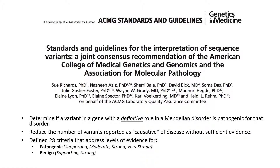In 2015, the American College of Medical Genetics and Genomics (ACMG) and the Association for Molecular Pathology (AMP) published a joint consensus recommendation for standards and guidelines for the interpretation of sequence variation. The overarching goal of these guidelines, in addition to providing a consistent standard, was to create a framework to determine if a variant within a gene that has a definitive role in a Mendelian disorder is pathogenic for that specific disorder. These guidelines are also intended to reduce the number of variants that are reported as being disease-causing but have insufficient evidence.